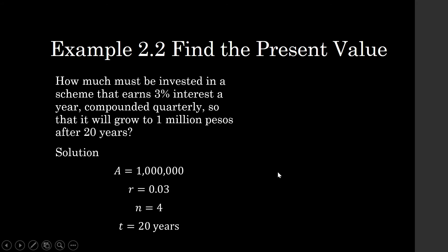A is equal to 1 million, R is 0.03, N is 4, T is 20 years.